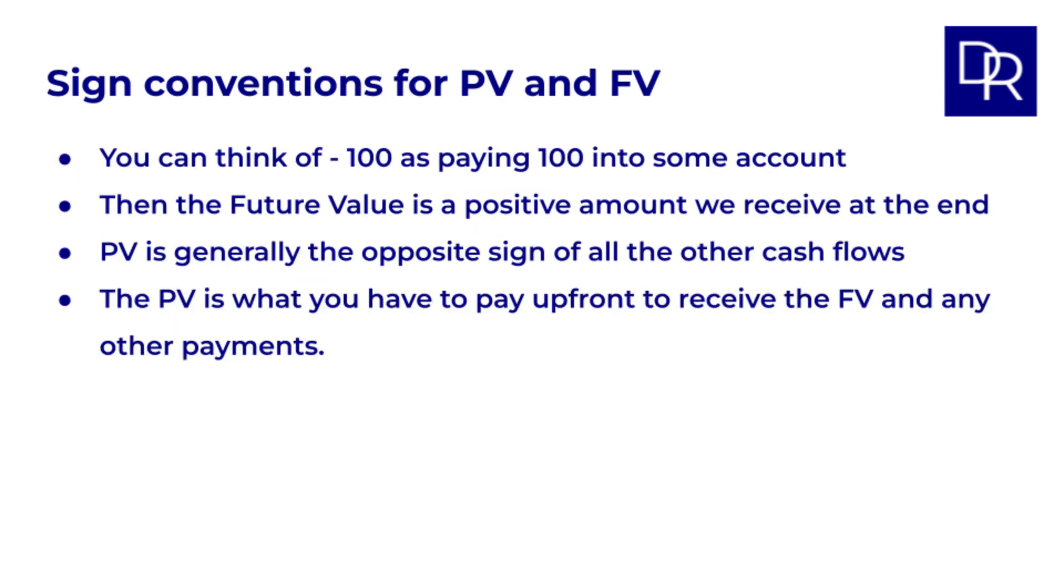One thing that trips people up is the sign conventions for PV and FV. We'll put negative 100 here, as we can think of our investment as paying 100 into some account. Then we calculate how much we get back later as our future value. This is an amount we then receive at the end, so this will then be positive. If it helps you can remember that the PV is generally the opposite sign of all the other cash flows. PV is what you have to pay upfront to receive the FV and any other payments.